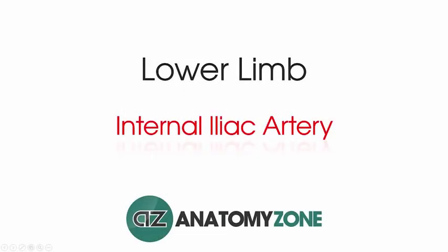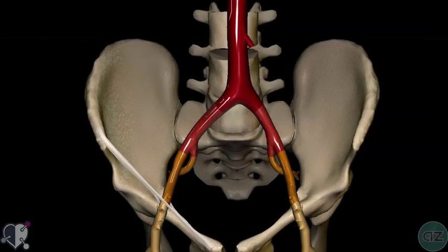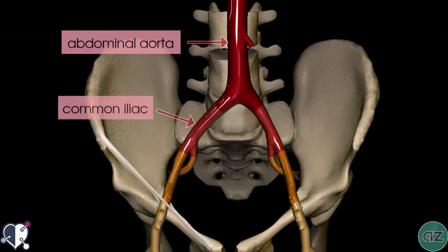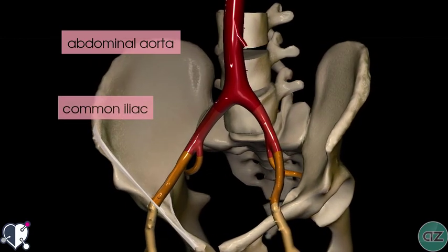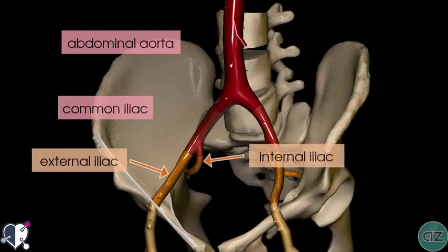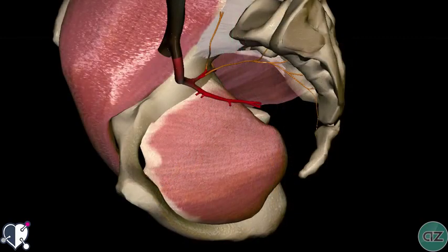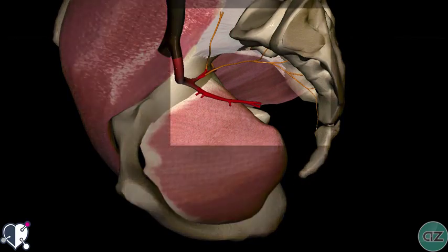Hi, this is Peter from AnatomyZone and in this tutorial, we're going to take a look at the internal iliac artery. In this model, we're looking at the abdominal aorta dividing into the common iliac arteries, which then divide into the external and internal iliac arteries. We're now looking at the right internal iliac artery — we've removed the left and the external iliac artery.